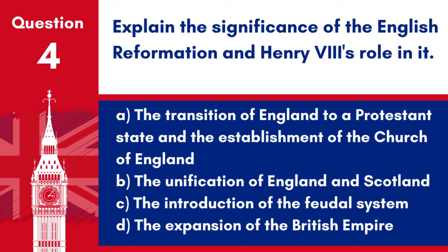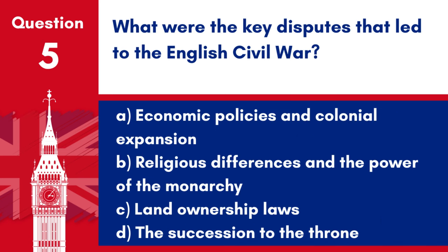Question 4: Explain the significance of the English Reformation and Henry the Eighth's role in it. a. The transition of England to a Protestant state and the establishment of the Church of England. b. The unification of England and Scotland. c. The introduction of the feudal system. d. The expansion of the British Empire. Answer: a. The transition of England to a Protestant state and the establishment of the Church of England. Henry the Eighth played a pivotal role in the English Reformation by establishing the Church of England, separating from the Catholic Church primarily to gain control over religious and marital laws.